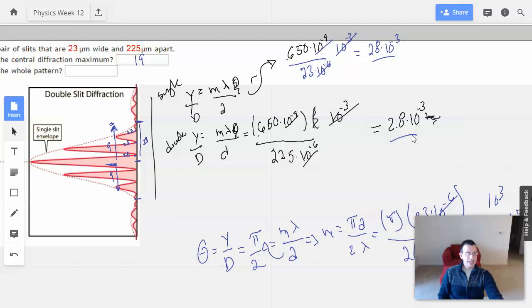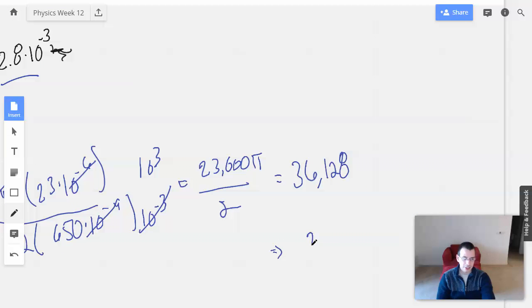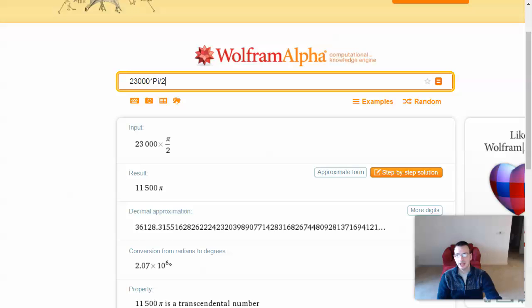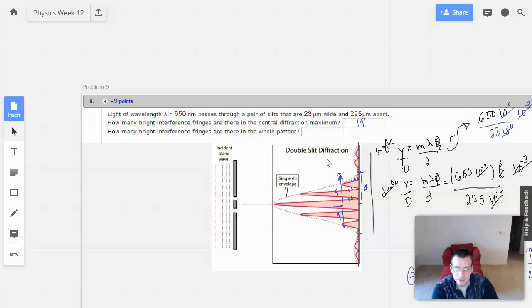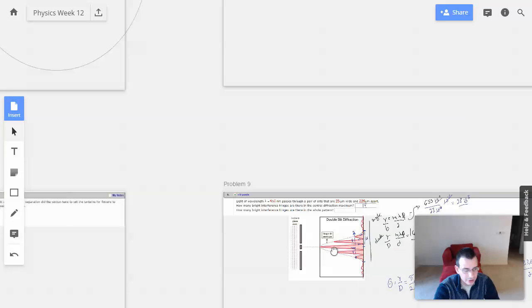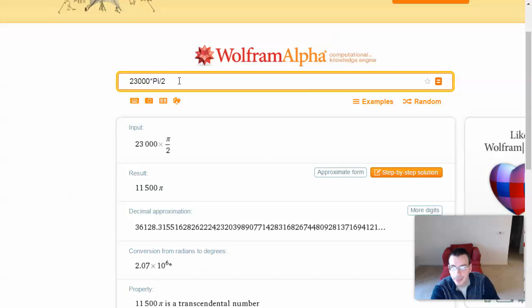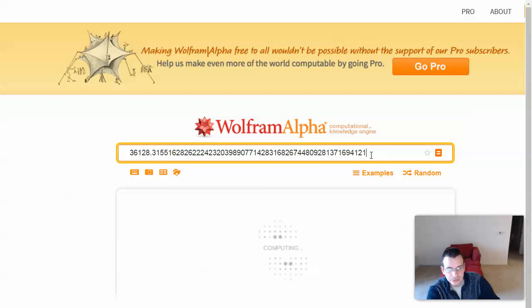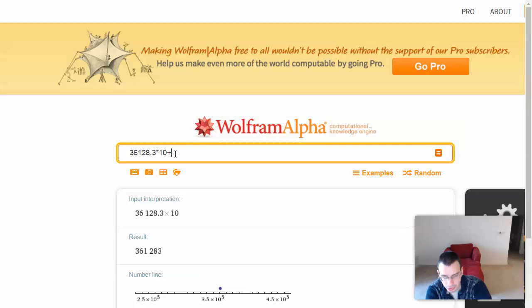And since there's going to be 10 maximum peaks for every large single slit maximum, we're going to multiply that by 10. So then total number of peaks will be 361,283. The one thing I forgot, I only counted the ones on top. So we'll take this guy, multiply it by 10, and then we'll add 1 for the center.